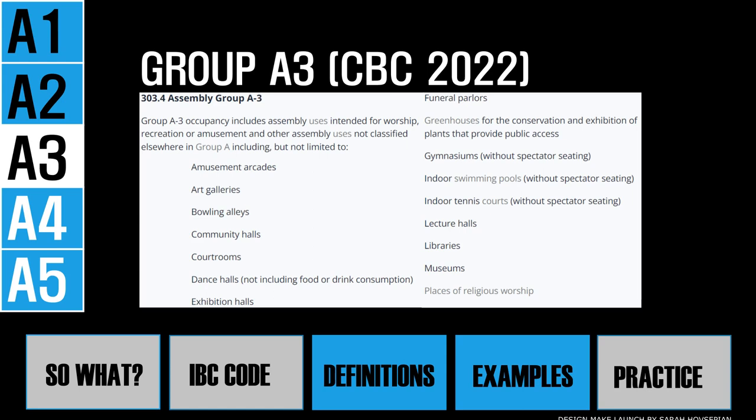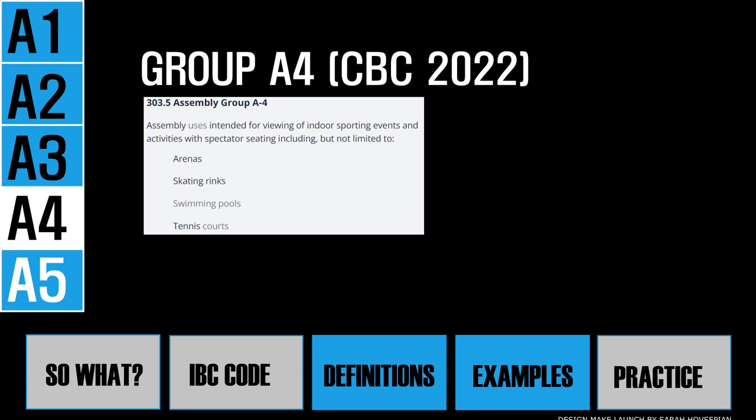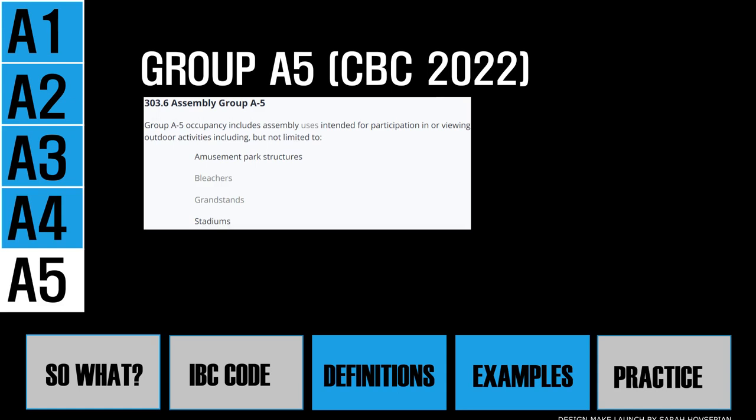Group A4 occupancies are assembly areas for the viewing of indoor sporting events. Group A5 is assembly areas for the participation or viewing of outdoor sporting events. To remember: A4 is indoor and A5 is outdoor sporting events and arenas.